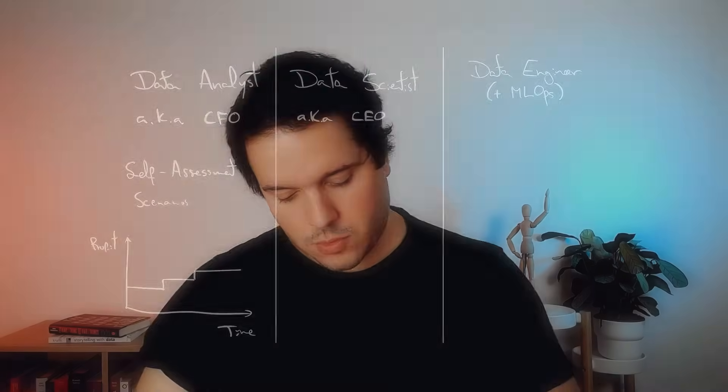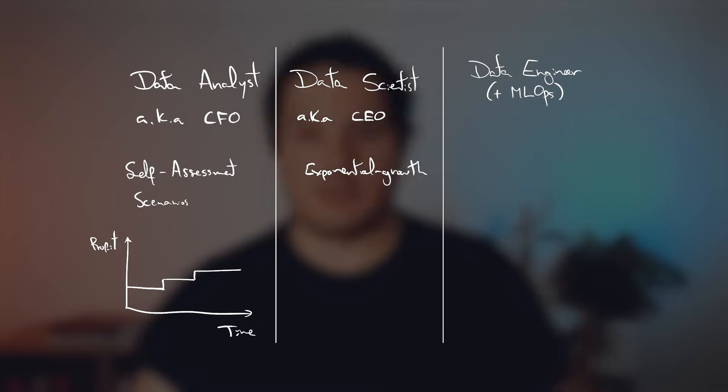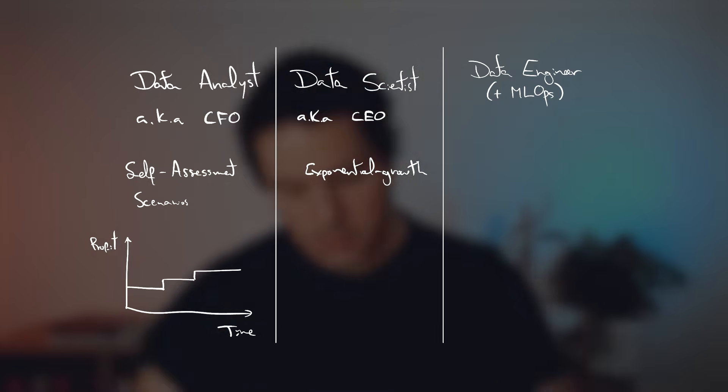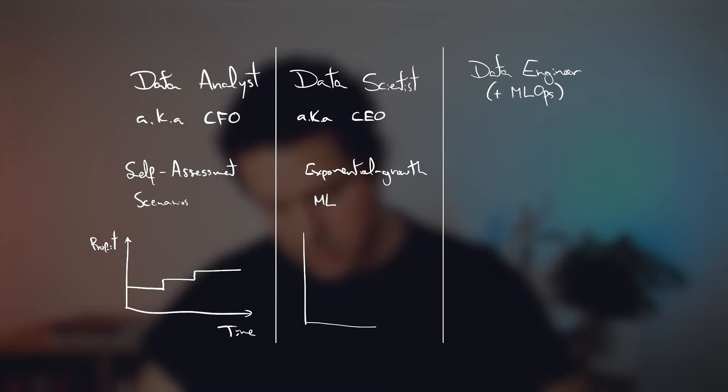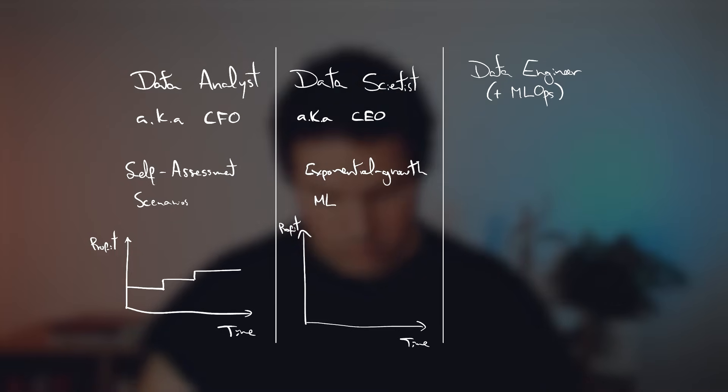What do I mean by the CEO? It's basically the one that defines the vision, where are we going, and it's looking for exponential growth. The vision of the data scientist is always to have this exponential growth or exponential improvement of your product. Why? Because data scientists work mainly with machine learning, and machine learning tends to improve over time as you get more data. So with a data scientist, if you are here on the time-profit curve, you will be able to start increasing — at least linearly, if not exponentially — your profit.